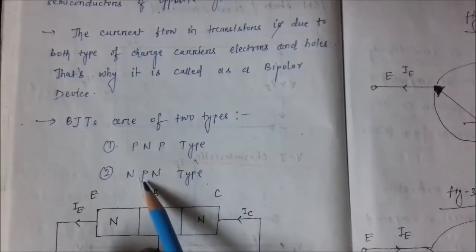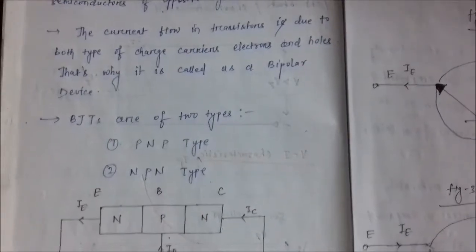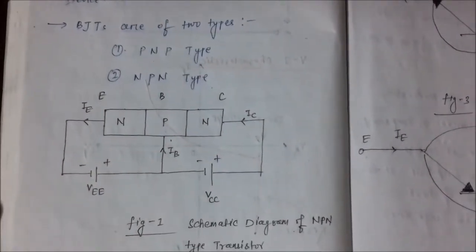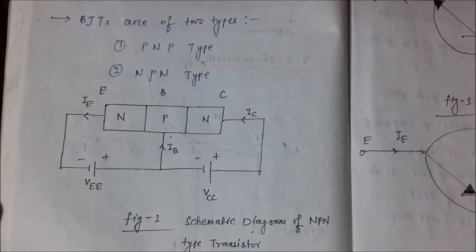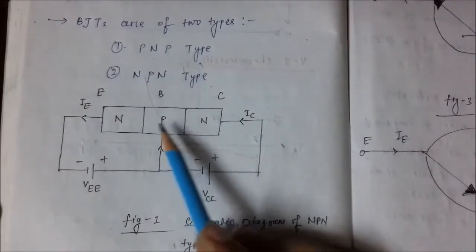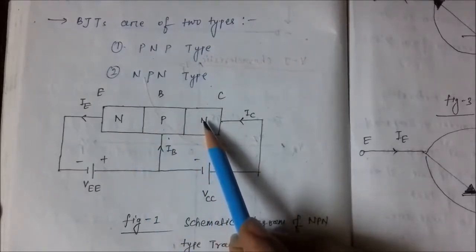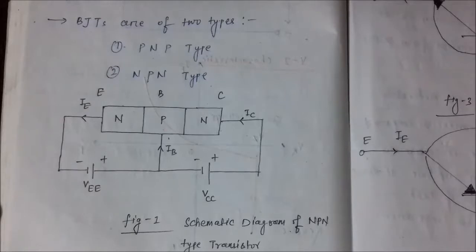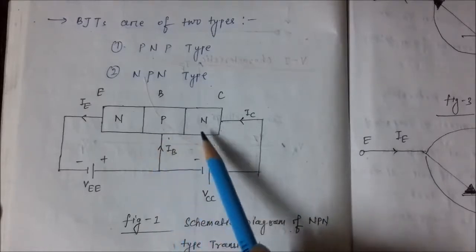This is the schematic diagram of an NPN type transistor. Here it is a p-type element which is sandwiched in between two n-type semiconductors.